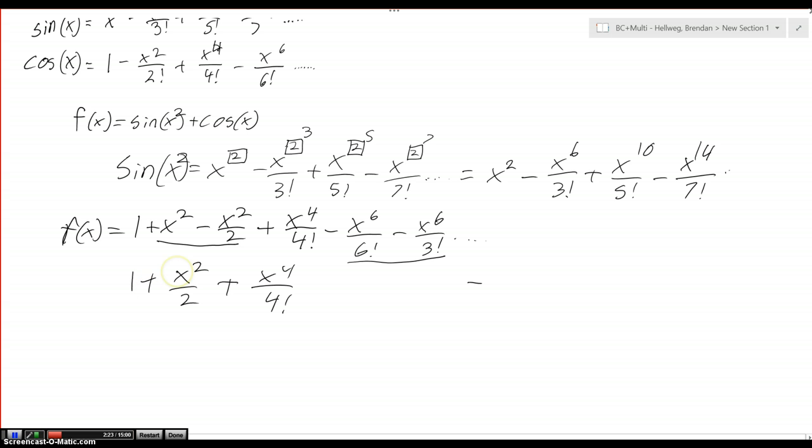And so now this is when it gets a little bit more complicated. That's going to be minus x to the sixth over 6 factorial which is equal to 720. So we're going to end up with minus x to the sixth over 720.